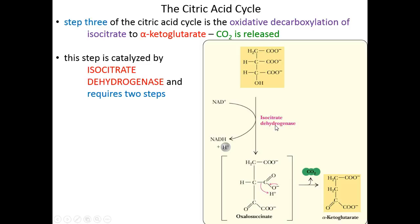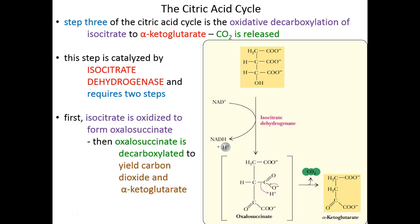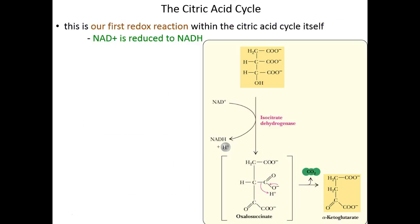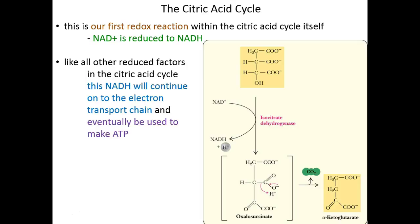The enzyme responsible is isocitrate dehydrogenase — a wonderful name that describes exactly what it does. Step three ends with alpha-ketoglutarate, one of the primary precursors for amino acid biosynthesis, in its L-form because of the chirality introduced in step two. This is also our first bona fide redox reaction within the citric acid cycle itself. It is NAD+ that accepted the electrons and protons harvested, reducing it to NADH + H. This NADH + H as a mobile electron carrier will shuttle those electrons over to the electron transport chain where they can be indirectly used to make ATP.